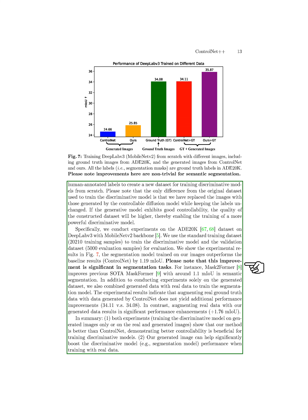To validate our controllability improvements, we created a new dataset by combining generated images with real human-annotated labels. By training discriminative models on this dataset, we observed that the quality improved with our controllable models' generated images, leading to a more powerful discriminative model. Our experiments on the ADE-20K dataset using DeepLab V3 with MobileNet V2 backbone showed that our segmentation model trained on our images outperformed the baseline results by 1.19 MIOU. We found that maintaining the original training process and using both pixel-level consistency loss and training loss are crucial for preserving image quality and controllability.